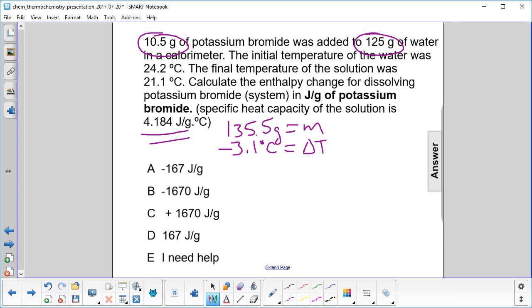Now we want to find the enthalpy change for the system in joules per gram. Delta H for the system is negative the enthalpy change for the surroundings. So we're just going to go ahead and put that negative in there.